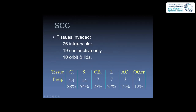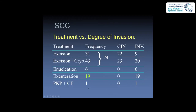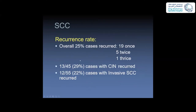Treatments for these patients were mainly excision or excision with cryotherapy, comprising about 75% of cases. Because of aggressiveness of the tumor, some ended with enucleation or exenteration, possibly due to delayed presentation. One case ended with penetrating keratoplasty. The overall recurrence rate is 25%. None of these 100 patients had medical therapy as it was before the era of medical treatment.